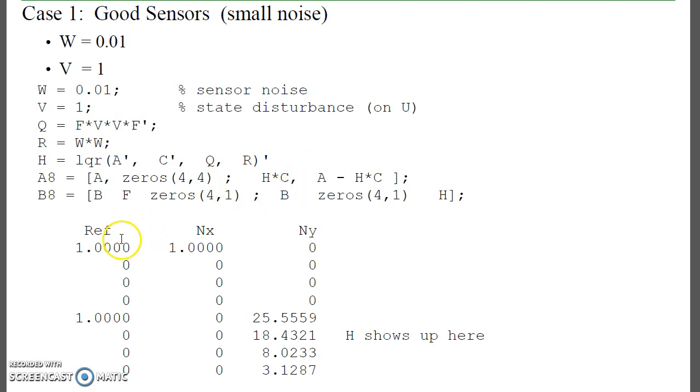My inputs, I've got an input from the set points of the reference, my input from the disturbance on the states, and my input from the sensors. This is where H shows up. H takes the sensor noise directly into the observer. In this case, these gains don't really matter because the sensor noise is so small. That won't affect my observer states all that much.